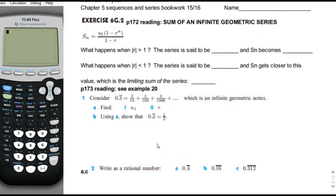This is the last section. We're going to talk about infinite geometric series. We've talked about arithmetic and geometric series that go a certain number of terms and finding the sum of those. Now we're going to talk about finding the sum of a geometric series that goes on forever. That might sound really crazy — why would something that adds up forever be something other than infinity?